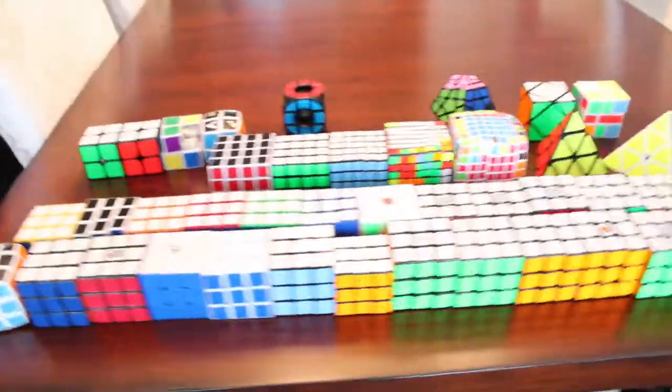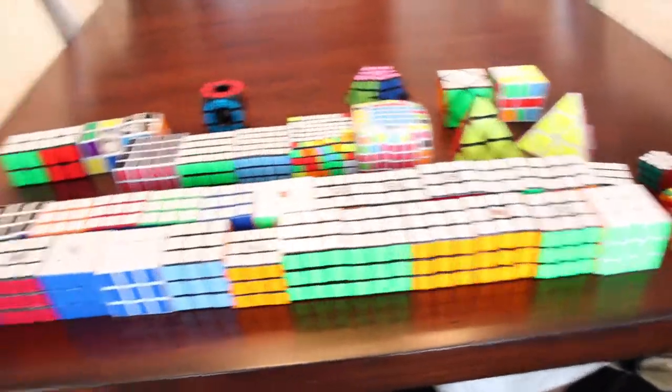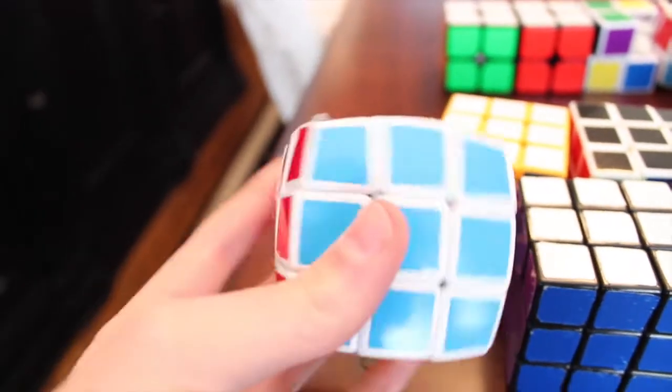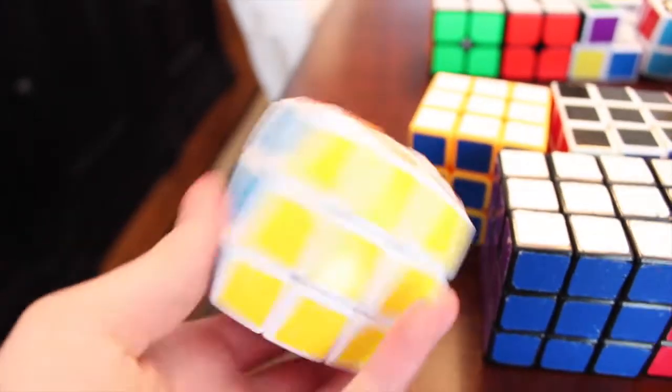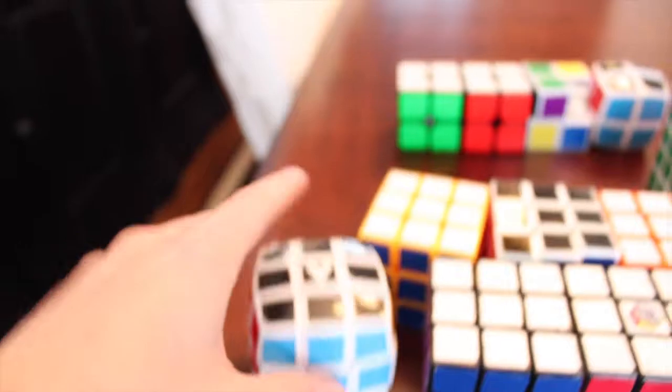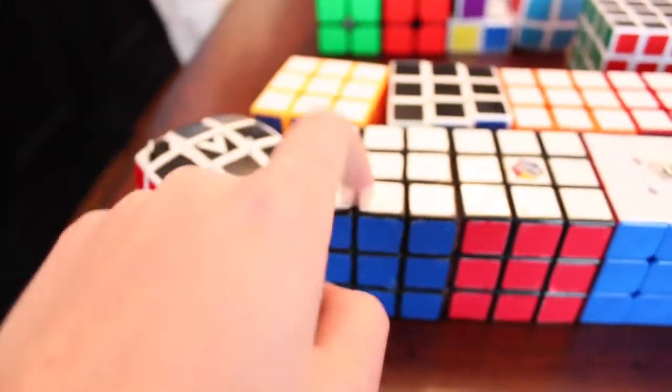So we're just going to start off with 3x3s. As you can see that is what takes up most of my collection. So starting off here we have a V-Cube, pillow V-Cube 3. Pretty nice, I mean that was my first cube.